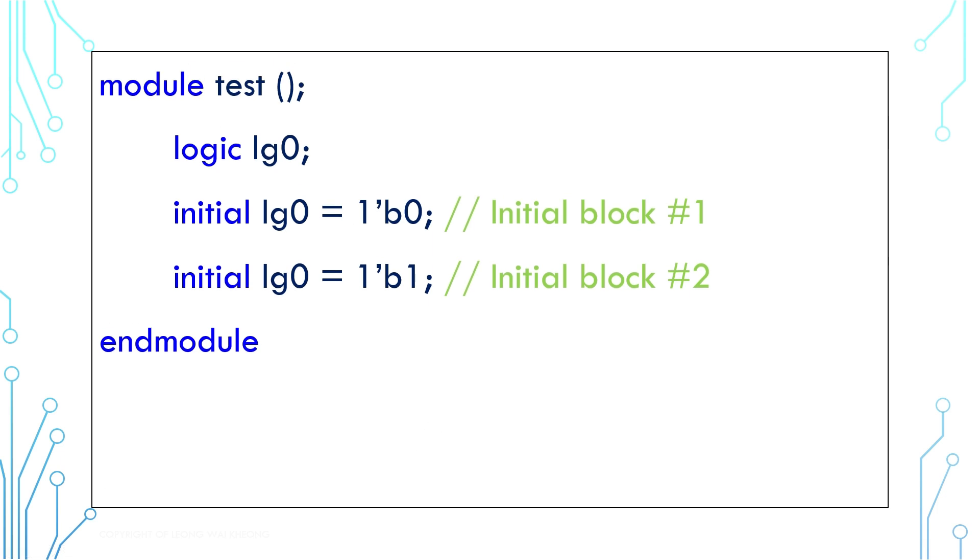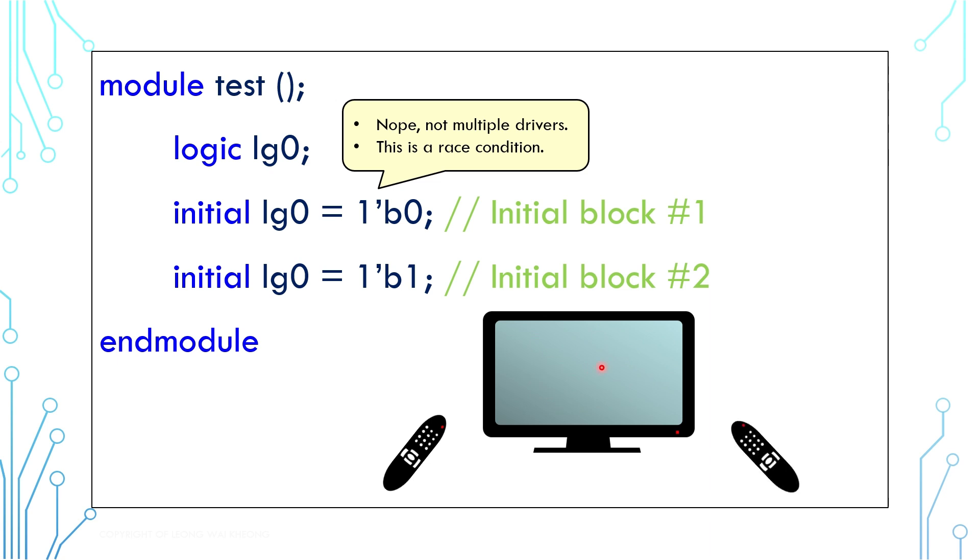Let's study more about multiple drivers. In this example, there are two initial blocks. One is driving the logic to zero and another is driving it to one. This is not a multiple drivers issue. This is a race condition. In analogy, it is the same as a television with two remotes. You can press both remotes at the same time. One of them will go first and the other will go second overriding the first one. This is the same case for the initial blocks. Generally, there is no way to tell which one will go first.